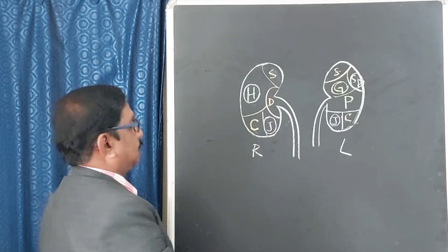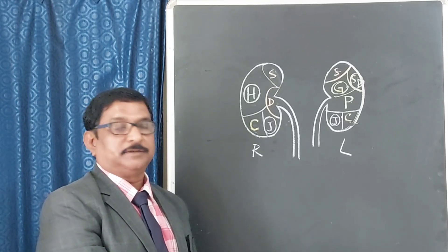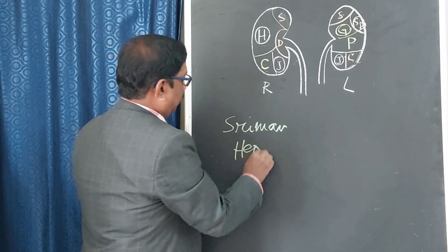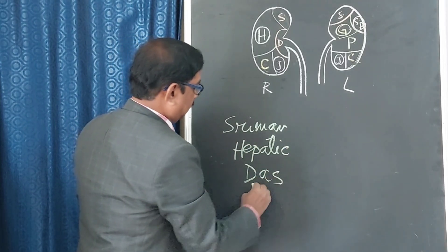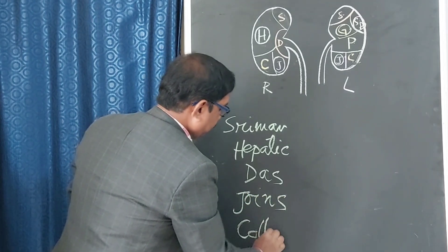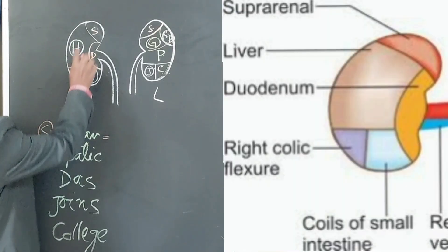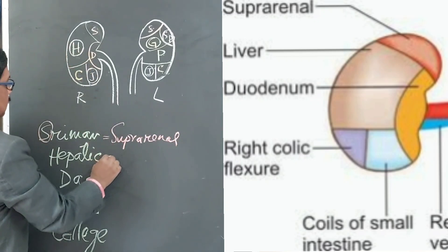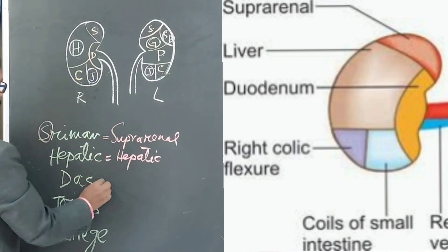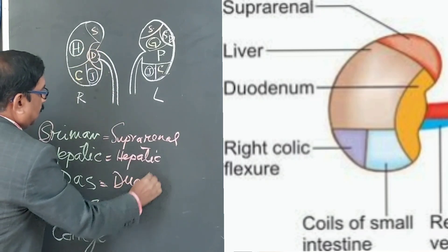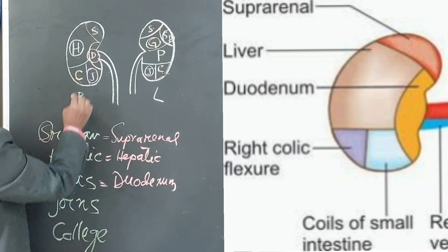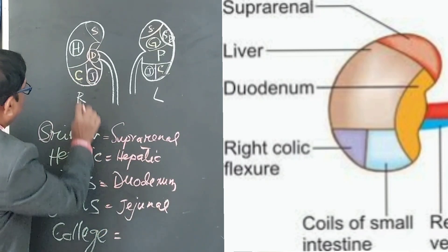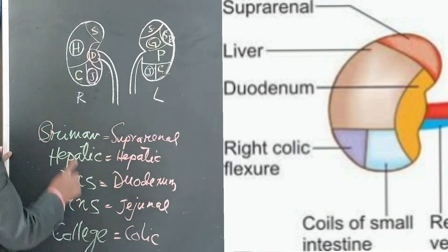Another way to remember all these relations — I am giving you a mnemonic for that. For the right kidney, the mnemonic is: S-Hepatic-Das-Joints-College. S stands for right suprarenal gland; Hepatic means the hepatic impression; Das means it is the duodenum; Joints stands for jejunum, the jejunal impression; and C means colic or right colic flexure, the colic impression. So these five cover the right side.